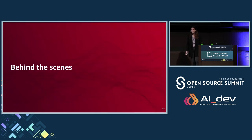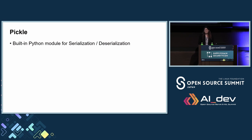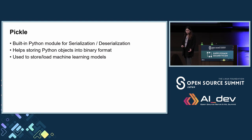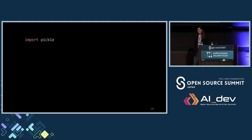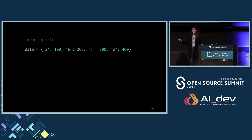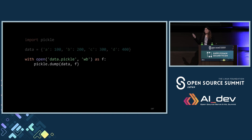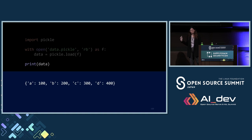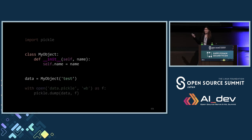What is actually happening behind the scenes is that there is a format called pickle — a built-in Python module for serialization and deserialization. Basically, it helps turn Python objects into binary format, and it's used to store and load machine learning models. Here's a quick example of how to use it: import it — it's built-in, no need to install. Use a data structure like a dict, open a file, dump it, load it back, print it — and you get the exact same dict. You can also use classes. Remember that.